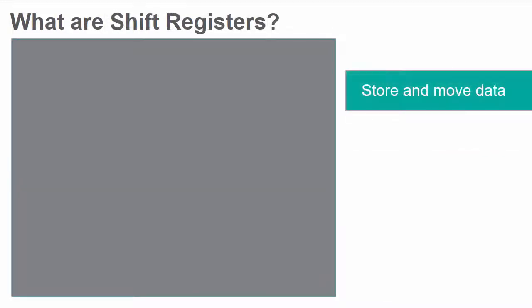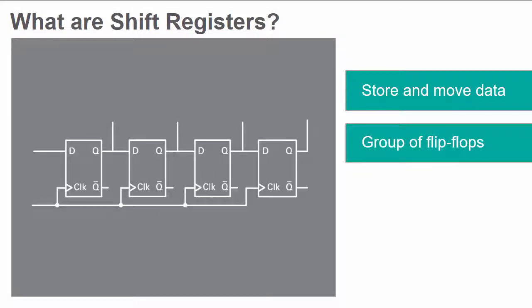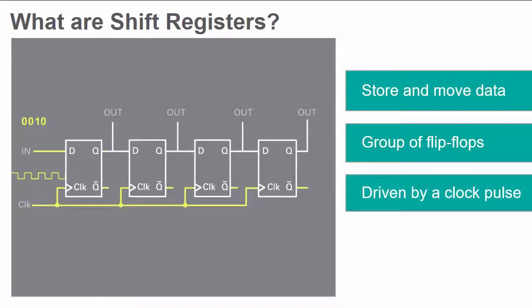Shift registers are circuits that store and move data. They consist of a group of flip-flops that shift the stored data from one flip-flop to a neighboring one for every clock pulse in a selected direction.